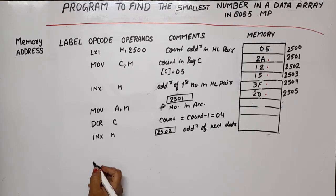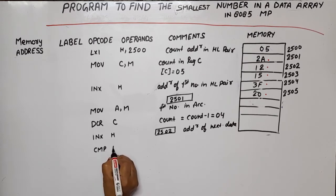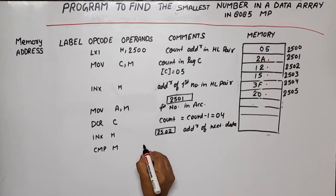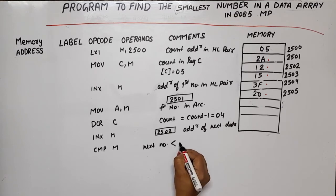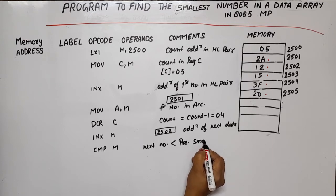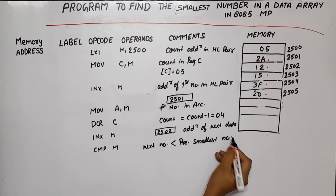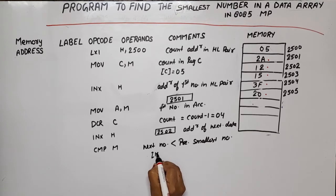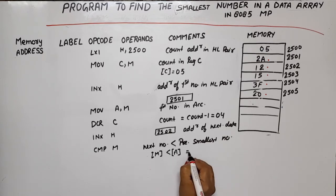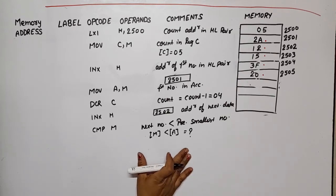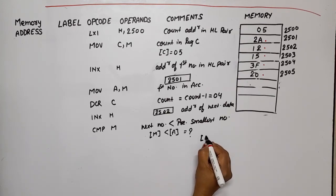Now that we have the data, we compare using CMP M. Here our comparison will check if the next number is less than the previous smallest number. Basically, we check the content of M with the content of the accumulator to see if it is less or not.